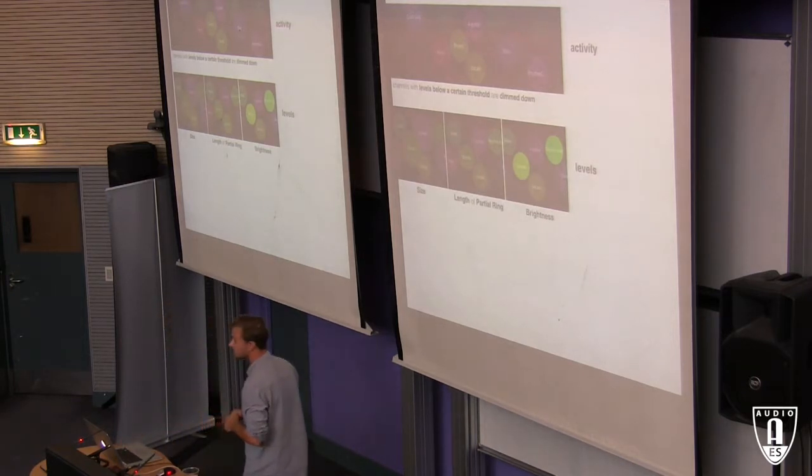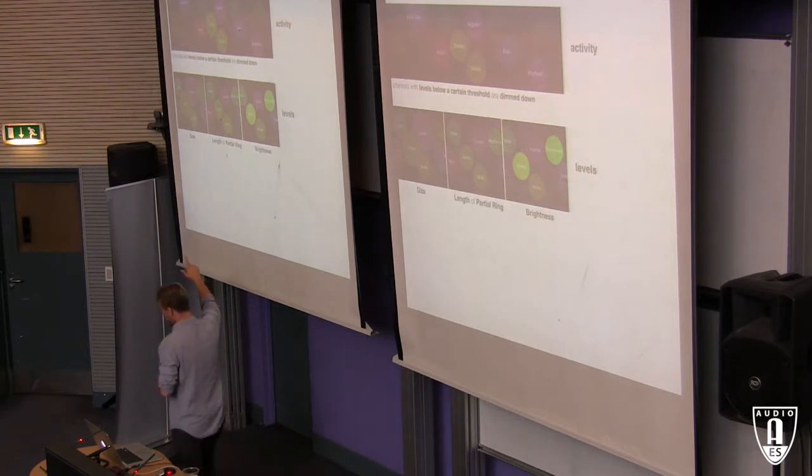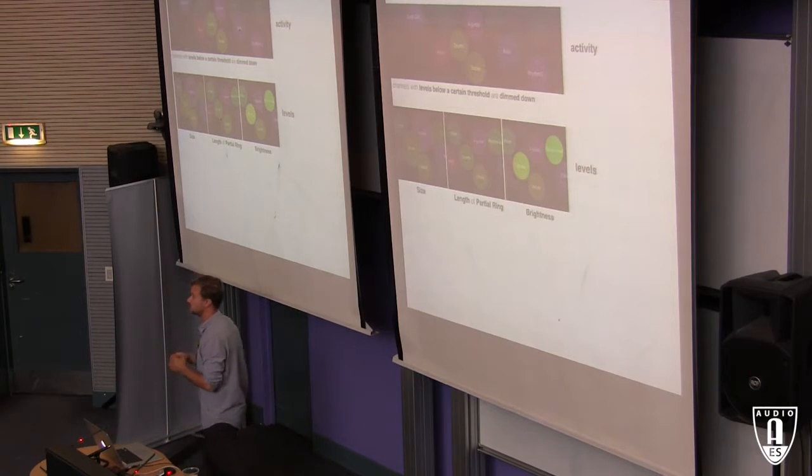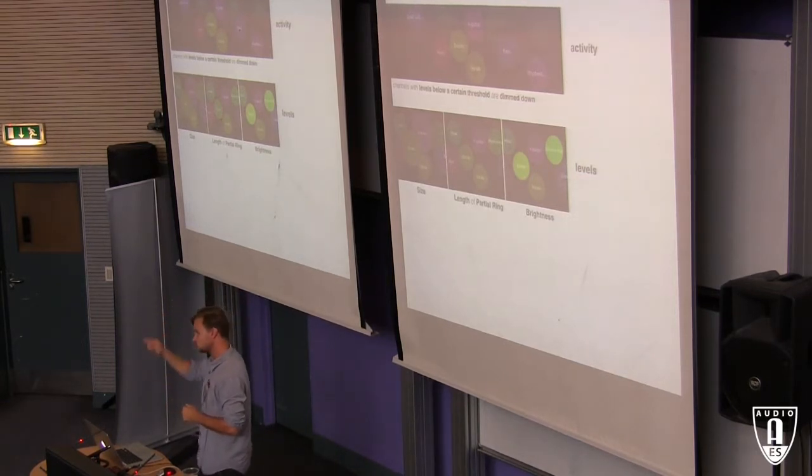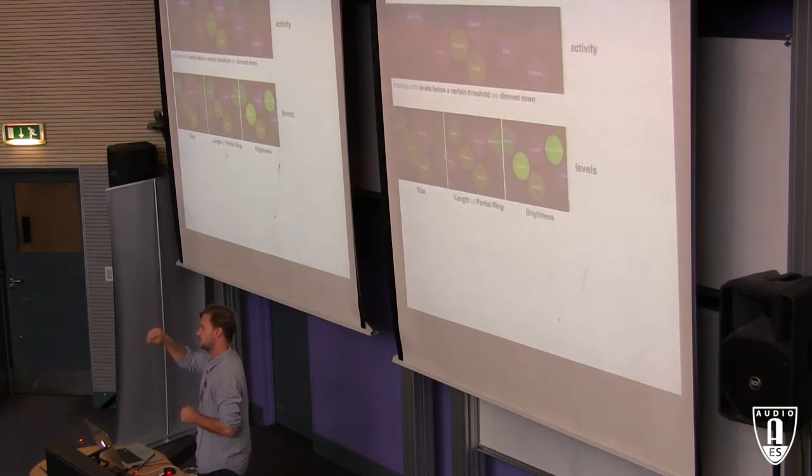Then we tried different visualizations of levels. Over here you might be able to see size as the first one. More loud, larger size. Then we had this partial ring that travels all the way around the widget. If it goes all the way around, it hits peak level. And the length of this ring would be somewhere in between.